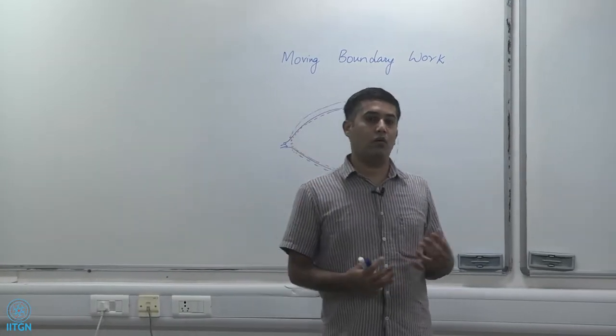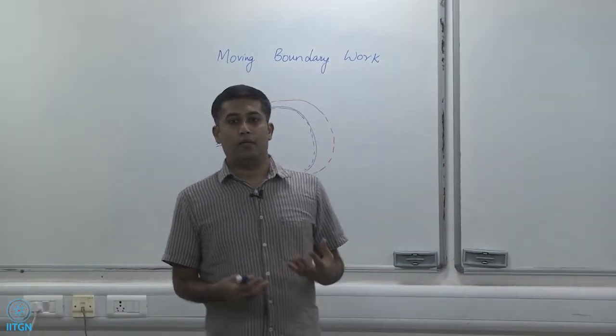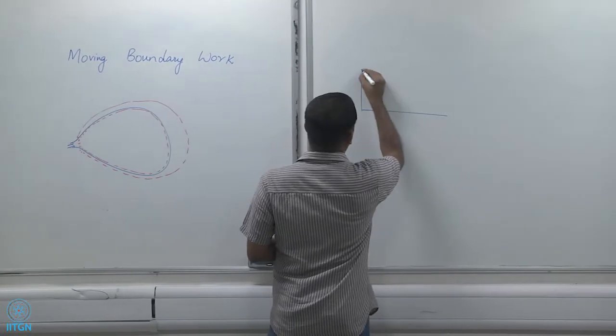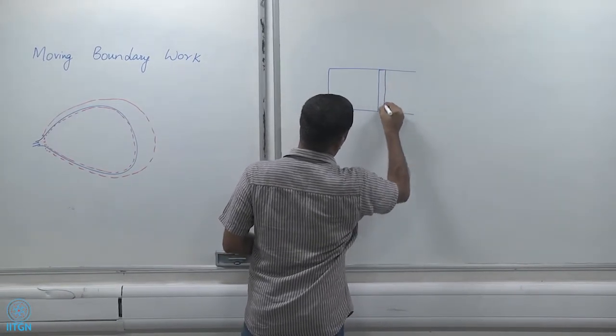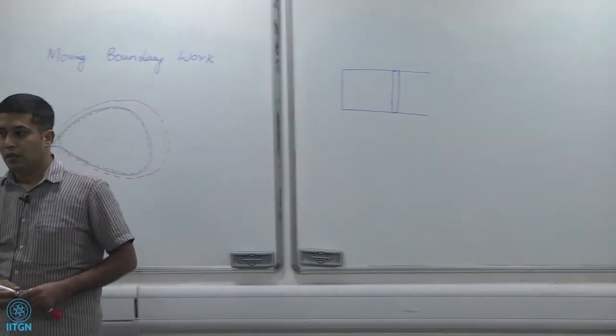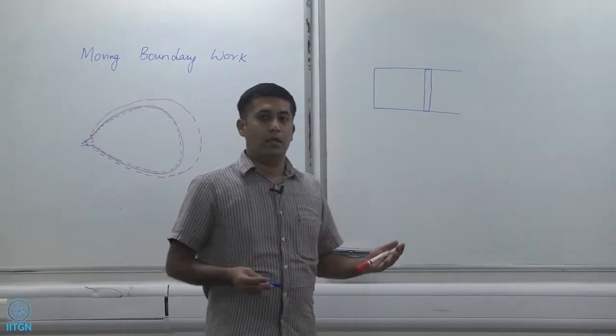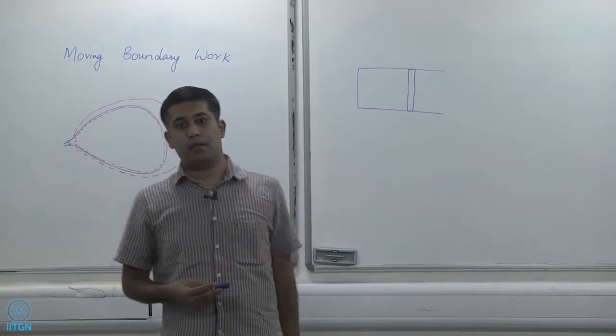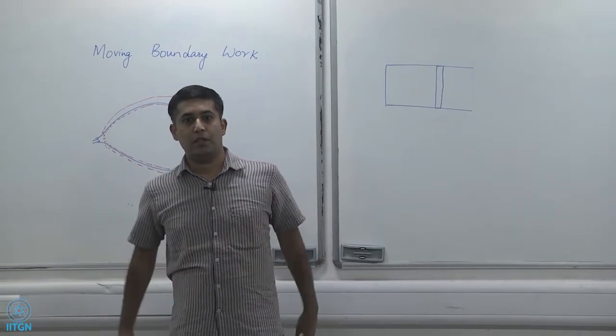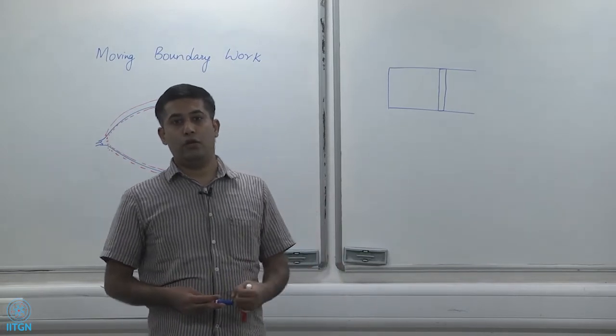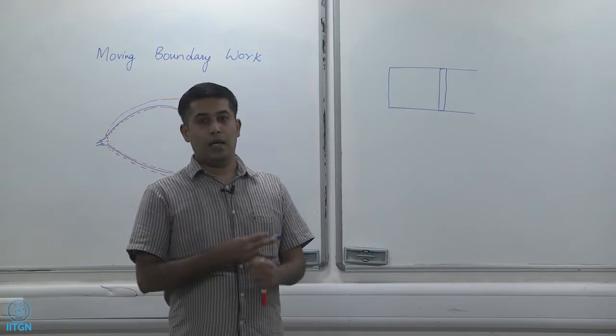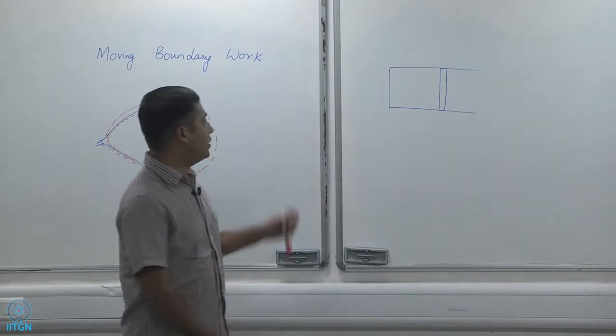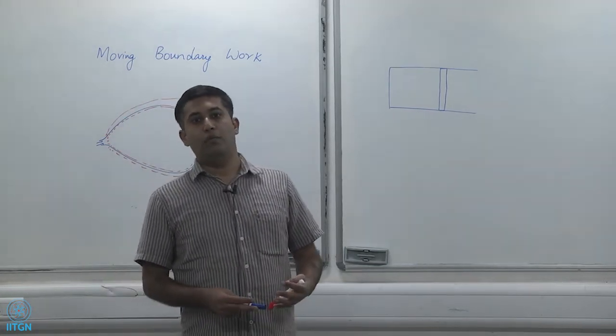In this module we are going to look at closed systems. A very good example of a closed system that does work on the surroundings is a piston cylinder arrangement. This is found in practically every automobile, every truck, car, and motorbike. The engine at the basic level is a piston cylinder arrangement where gas is filled. When the piston compresses, heat is added, usually in the form of fuel being burnt inside the compressed air. Then the hot gases expand and push the piston out, thereby doing work on the piston. A piston cylinder arrangement is a very common everyday example of moving boundary work.